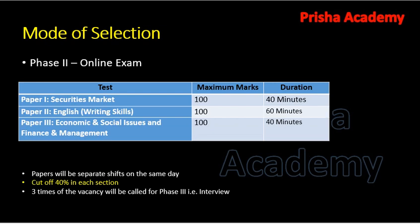Phase 2 is also an online exam consisting of three papers: Paper 1 on Securities Market, Paper 2 on English writing skills, and Paper 3 on Economic and Social Issues and Finance and Management. All three papers carry 100 marks each. Paper 1 is 40 minutes, Paper 2 is 60 minutes, and Paper 3 is 40 minutes.